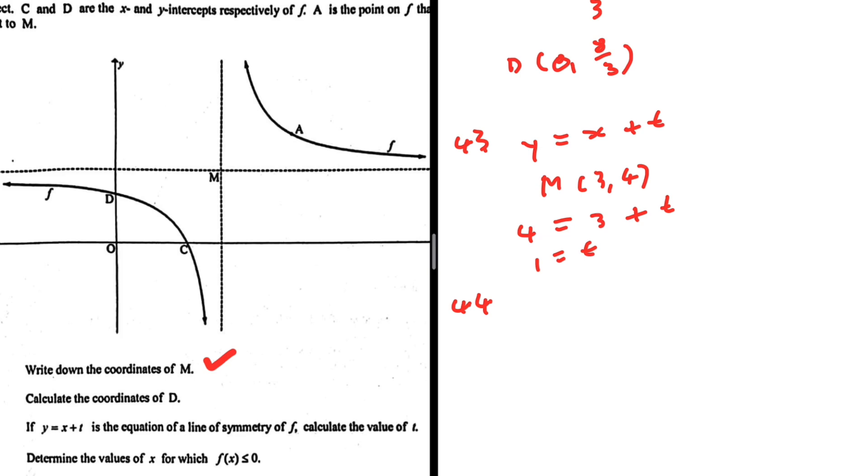So 4.4, determine the values of x for which f(x) is less or equal to 0. So obviously we can, okay, it says determine, not write down. So we can calculate, right? But just looking at the function also, we shall be able to determine those values.